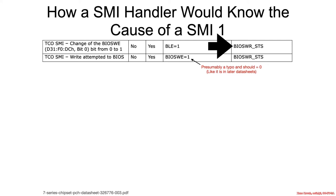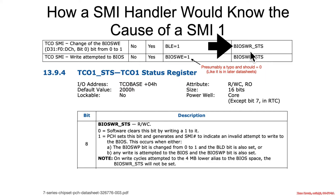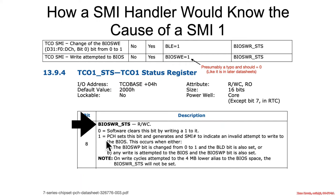We're going to be in a very typo-y section of the manual apparently here, or at least according to my interpretation — I might be wrong and some Intel person can go tell me I'm wrong. But I believe this should be BIOS write enable equal to zero — so attempting to write to the BIOS while write enable is zero. When we go search for this BIOS write status flag, we find this: there's a TECO status one register, it has BIOS write status inside of it. If it's zero, the software clears this bit by setting it to one. So after the system management interrupt happens, if this bit was set, then software would clear it by setting it to one, which would put it back to zero.